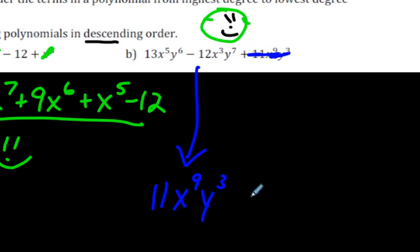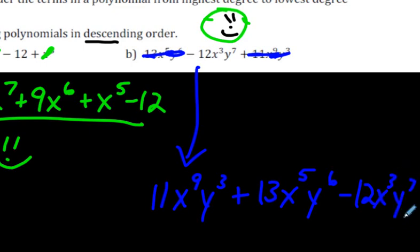We're this one right here. Plus 13x to the fifth, y to the sixth. And lastly, all we have to do is write down the last one. x to the third, y to the seventh. And that is, we are done.